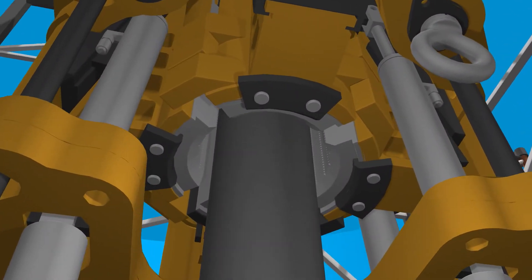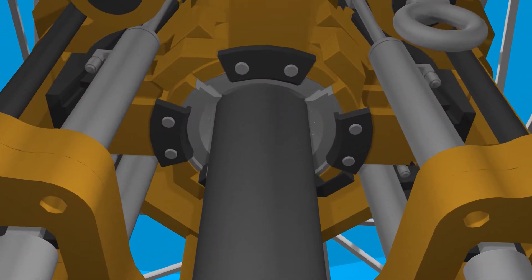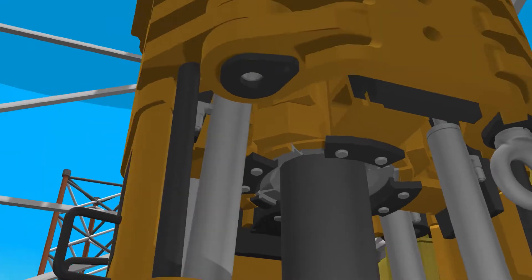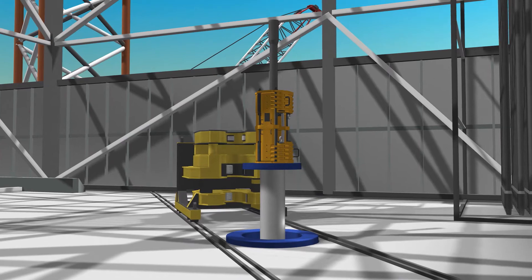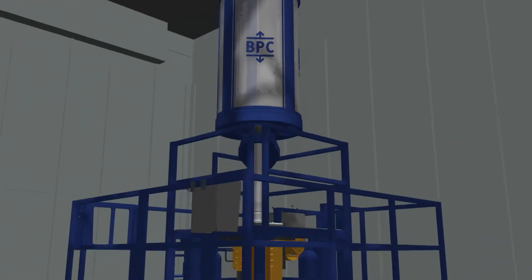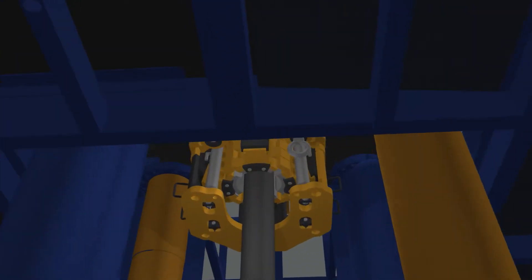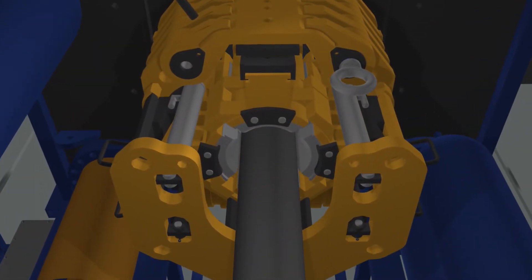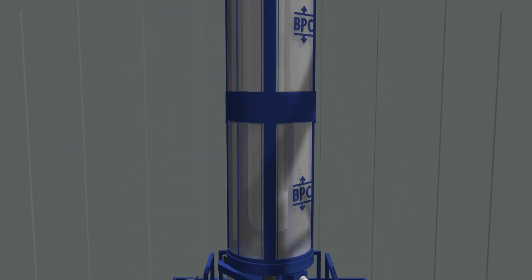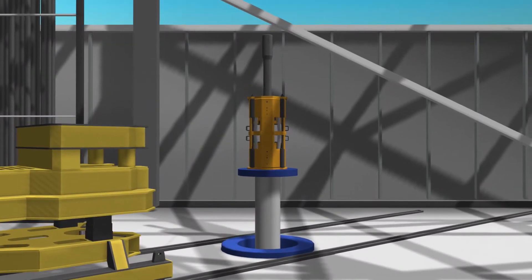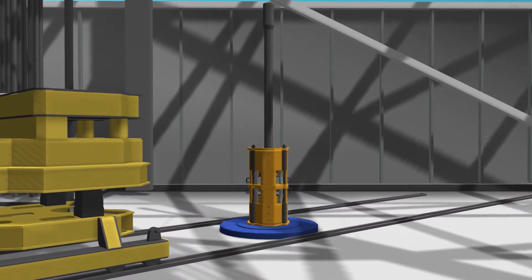First, the traveler slips secure on the pipe. The pipe is moved using a hydraulic jack. Next, the stationary slips secure on the pipe, holding it firmly in place. This way, the traveler slips can release the pipe, allowing the jack to reposition.